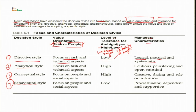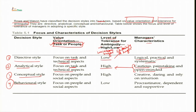The analytical style also focuses on task and technical aspects, but here the level of tolerance for ambiguity is high — meaning high uncertainty. The manager's characteristics include being cautious, painstaking and open-minded to correspond to this high ambiguity level. The third category is the conceptual style, where the focus shifts to people and social aspects rather than technical. Tolerance for ambiguity here is also high, and the manager's characteristics include creativity, daring and relying on intuition to guide further judgment.